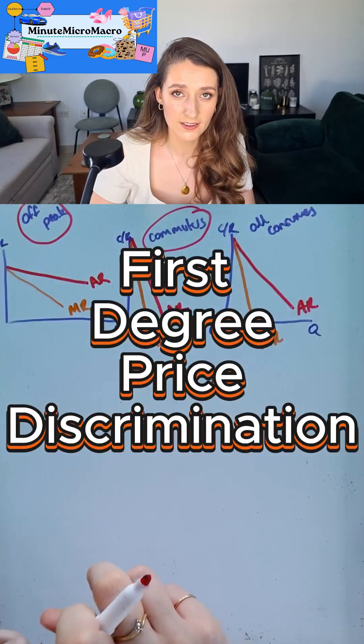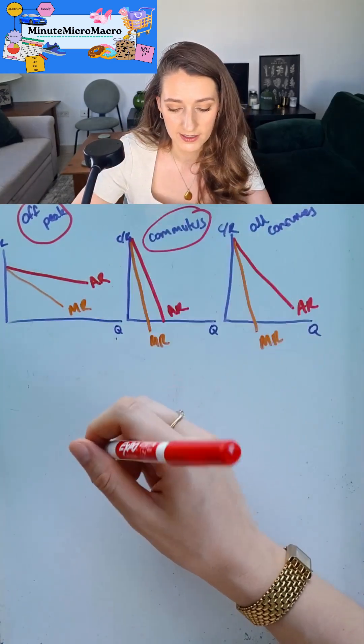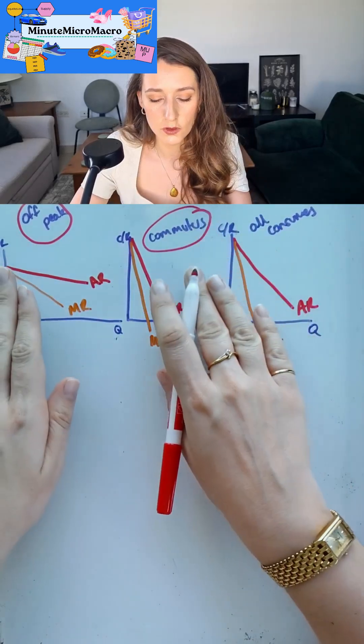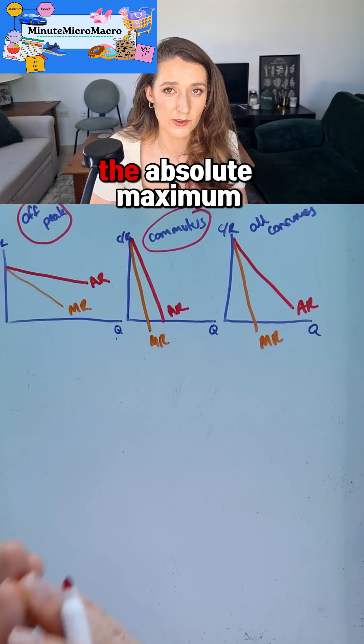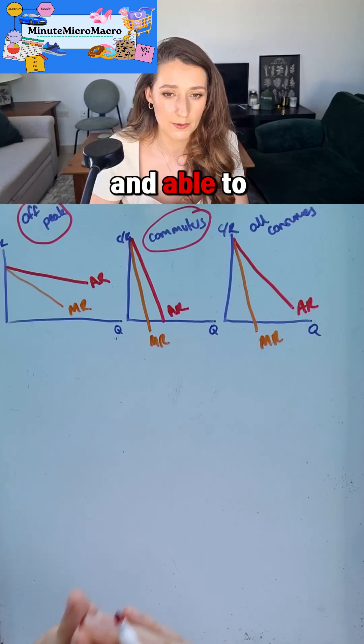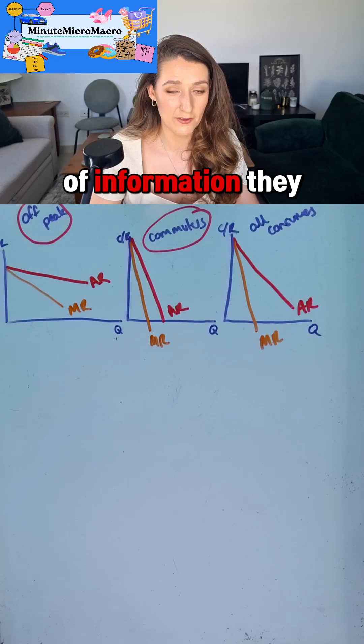There's also something called first-degree price discrimination. This is not just when we group our consumers. We can charge every single individual the absolute maximum they were willing and able to pay. As companies increase the amount of information they hold on us and they are tracking our internet use, they can see in our cookies how often we are looking at certain websites.